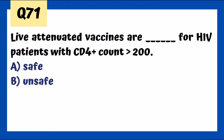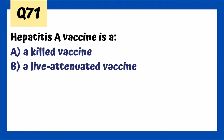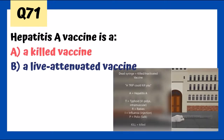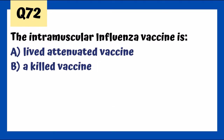Live attenuated vaccines are safe for patients with a CD4 count greater than 200. For HIV patients, as long as their CD4 count is above 200, it's safe. Hepatitis A vaccine is a killed vaccine. The mnemonic: 'a trip could kill you' — A for hepatitis A, trip for typhoid, rabies, influenza (injection), and polio. The intramuscular influenza vaccine is killed; the intranasal influenza vaccine (FLUMIST) is live, not given to children less than two or older adults.